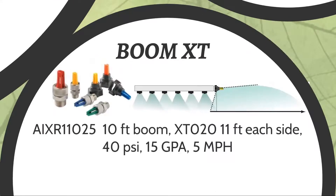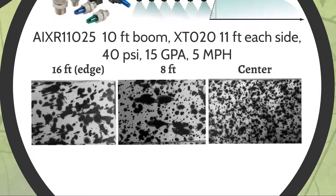Nozzles in this example are the same as those used on the boom — AIXR 110-025s — with a 10-foot boom no wider than the actual vehicle, plus two extender nozzles accounting for 11 feet on each side. They spray about 18 feet each, and we're again getting 50% overlap on either side. Same pressure, same volume, same speed. The coverage we got is much, much better than the Hamilton nozzle, basically without slowing down and without adding more water.